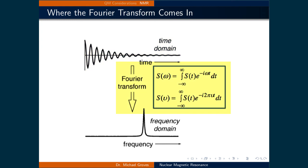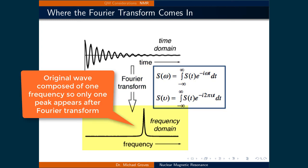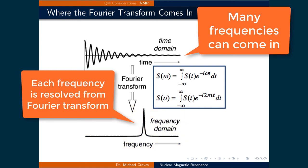Fourier transforms take signals in the time domain and change them to the frequency domain. So what this means is that all the frequencies in that wave can be resolved into individual peaks, whose frequency can be determined by looking along the frequency axis. This way, all the information can come in at the same time, and all the different Larmor precession frequencies can be determined.